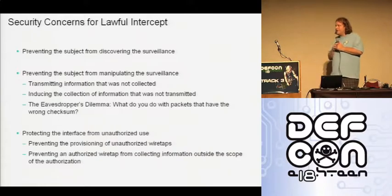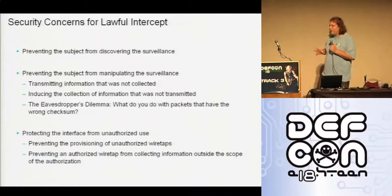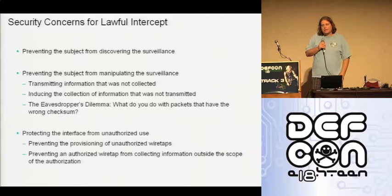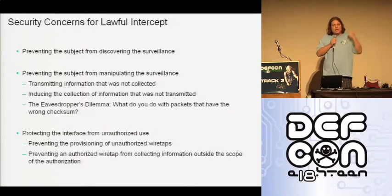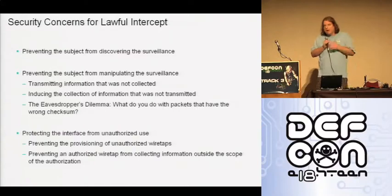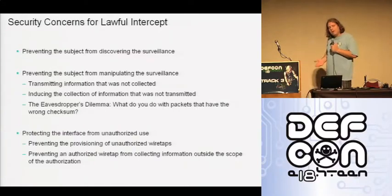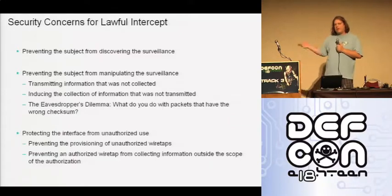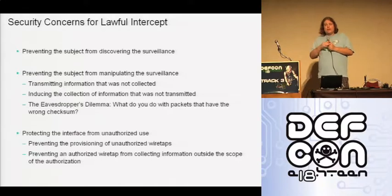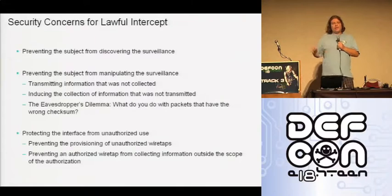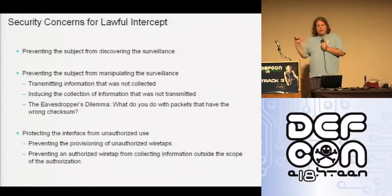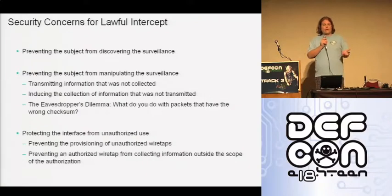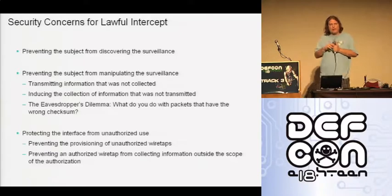The second thing to consider — covered in Matt Blaze's excellent paper 'The Eavesdropper's Dilemma' — is what you do with malformed data. What do you do with a packet that has a bad checksum? If you include it, the suspect could generate cover traffic with bad checksums to misdirect the surveiller. If you exclude it, the suspect can send all traffic with bad checksums and configure the receiver not to check them. It's a difficult and interesting issue, but it's not what I'm covering today.